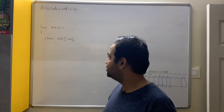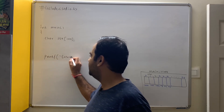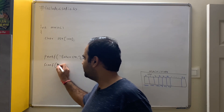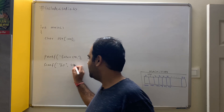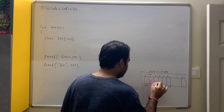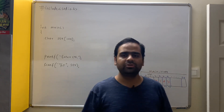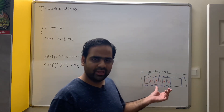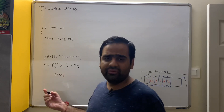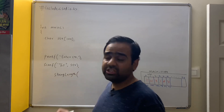Suppose I enter the string as India. What will be stored here? I, n, d, i, a and the null character — this is how it will be stored. Now I want to find the length of the string India which is 5, because we count except the null character. For this, let us write one function called string length — there is a built-in function as well which I am going to discuss after writing this code. I say string_length(str).